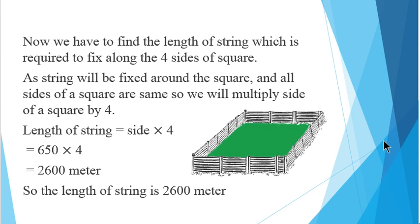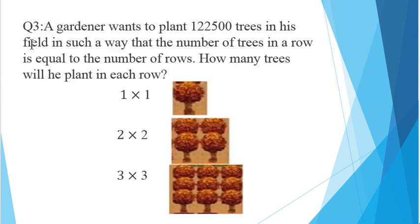So, the length of the string which is needed to cover all the four sides of a square field is 2600 meter. Hope you will understand this. Now, we are moving to the next question. The question number 3 is there.